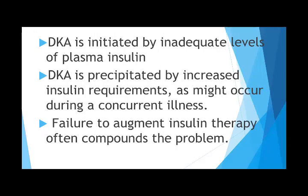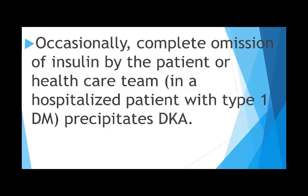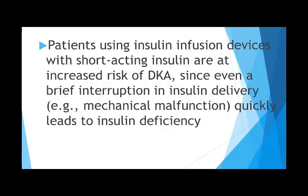DKA is initiated by inadequate levels of plasma insulin and precipitated by increased insulin requirements — as occurs during infection. Failure to augment insulin therapy compounds the problem. If the patient's insulin requirement increases and the dose is not adjusted to meet the new requirement, this is another factor in DKA development. Complete omission of insulin — by the patient or healthcare team — in a hospital patient with type 1 diabetes also precipitates DKA. Patients using insulin infusion devices with short-acting insulin are at increased risk since even a brief interruption quickly leads to insulin deficiency.